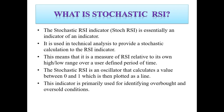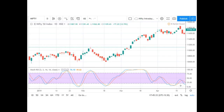The Stochastic RSI is a measure of RSI relative to its own high or low range over a user-defined period of time. It is an oscillator that calculates between 0 and 1 and is plotted as a line. This indicator is primarily used for identifying overbought and oversold signals when applied on a chart.